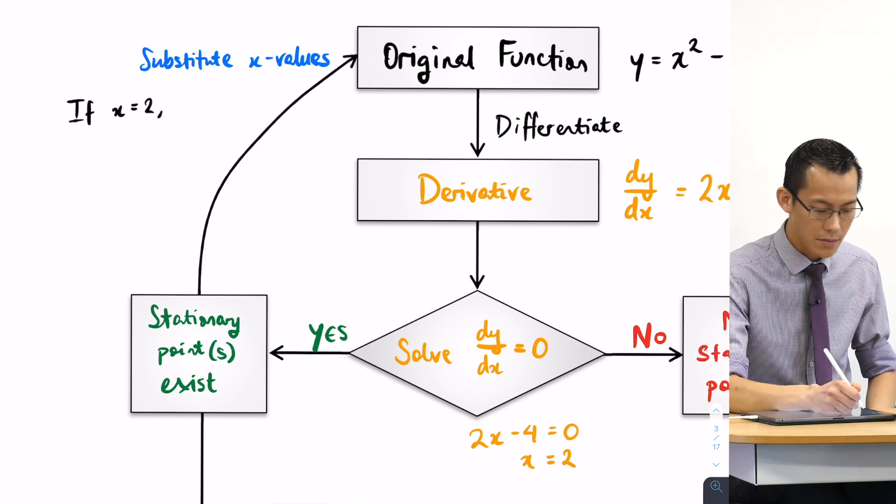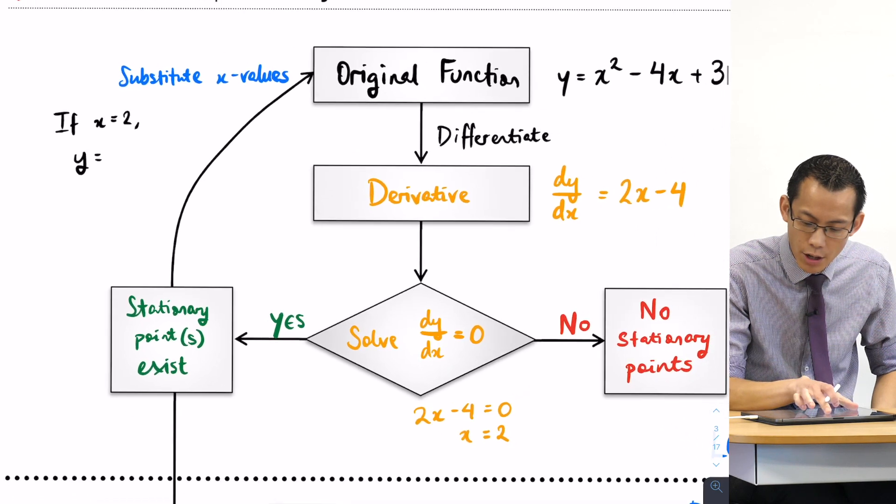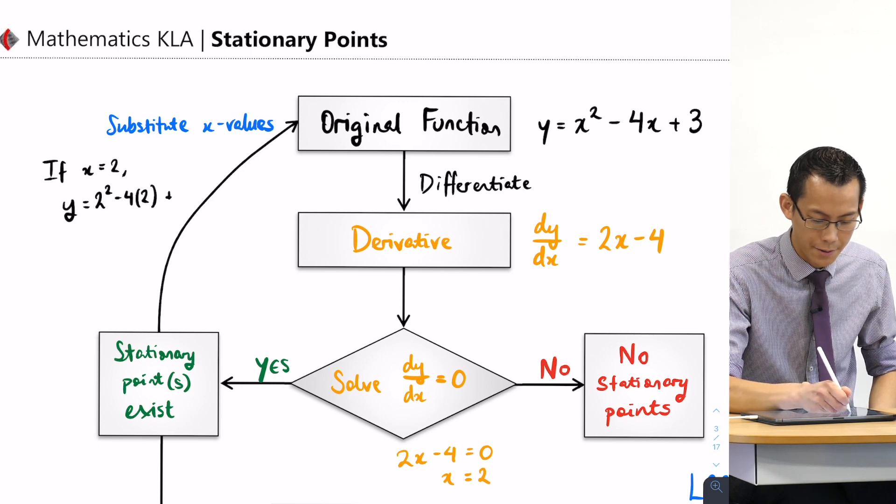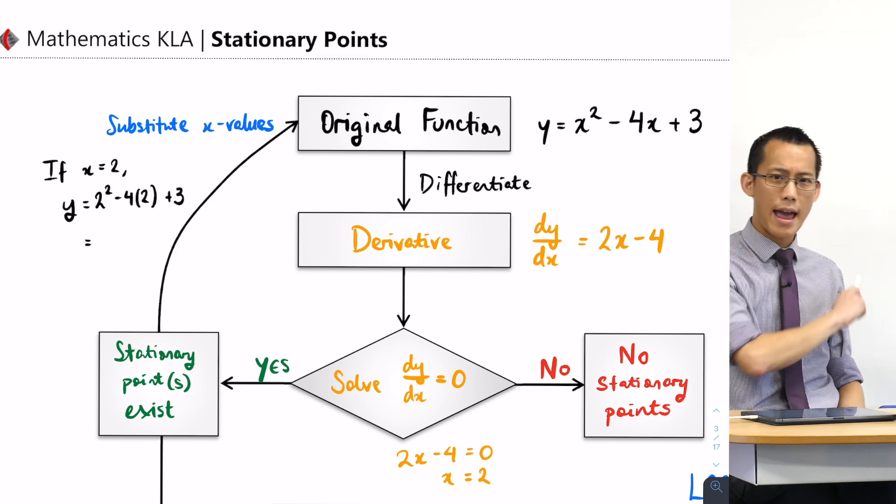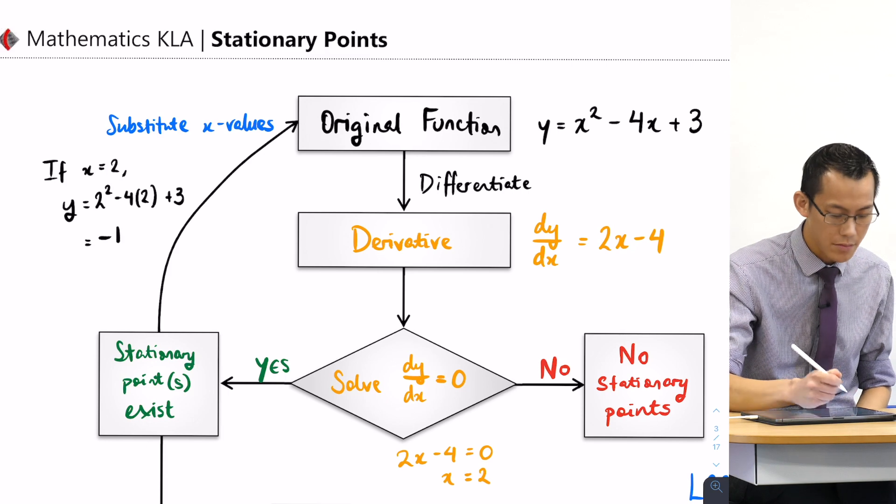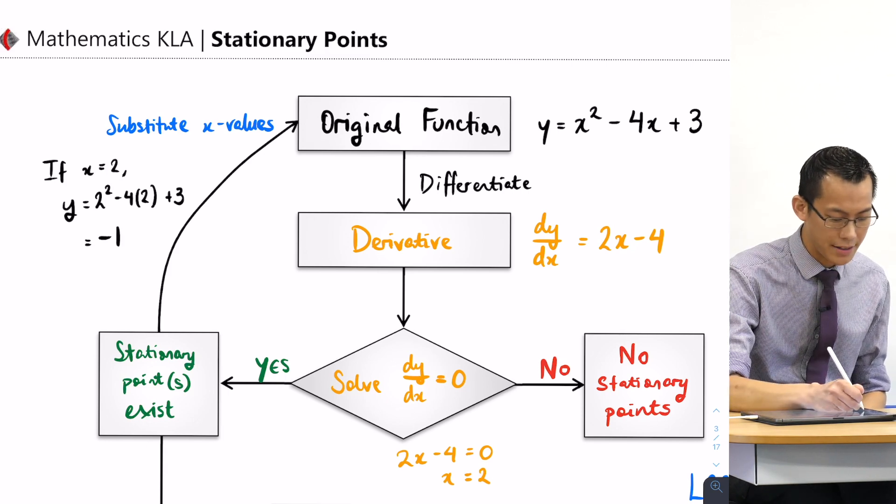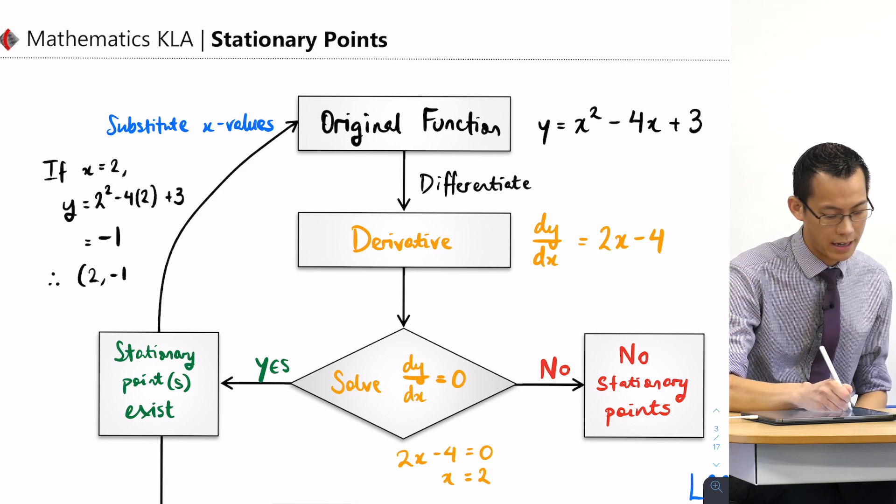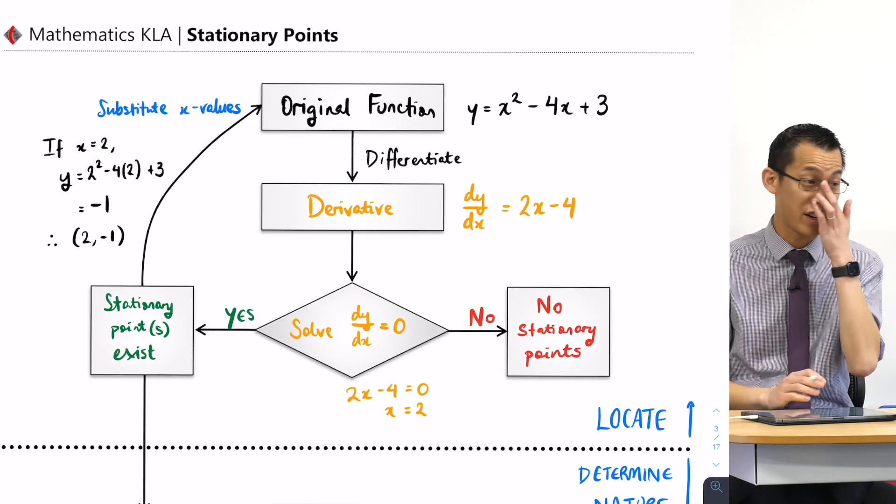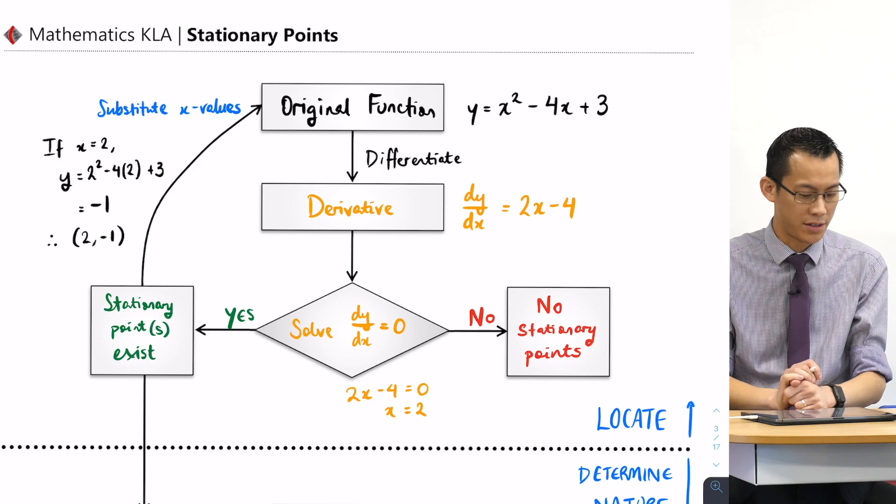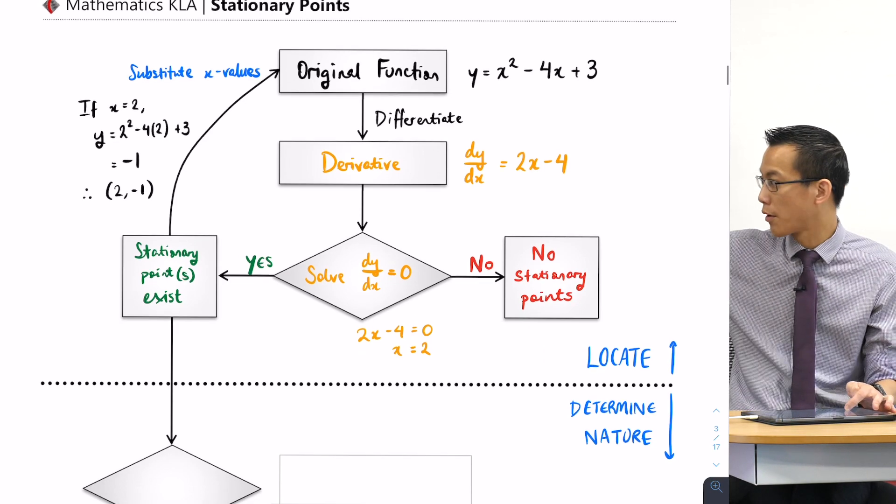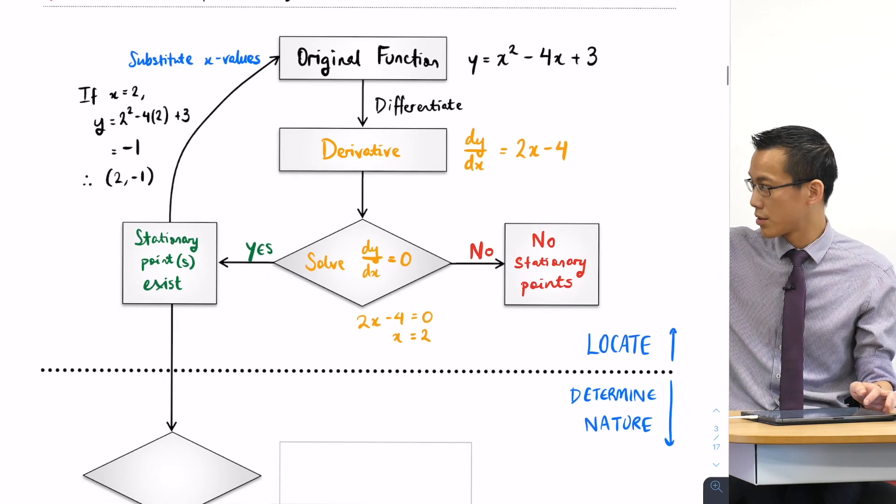If x equals 2, then y is equal to, let's have a go here: you've got two squared minus four lots of two plus three. So four take away eight is negative four, then you add three which gives you negative one. I've got an x value, I've got a y value, so therefore I can say the coordinates two comma negative one. That's my stationary point. I've located this stationary point.